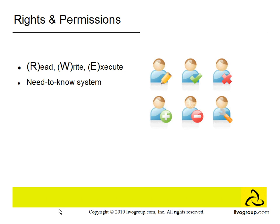Under authorization is also the least privilege principle. The idea is that the fewer people who have access to the authorized system, the less likely the system would be compromised.